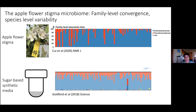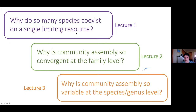I'm placing these two findings side by side. Of course they're not identical, but these environments are very different — a flower versus a sugar-based synthetic medium. Interestingly, we think the nutritional environment a microbe experiences in the flower is not that different from what we find in our experiments. This paints a picture presenting several questions. The first is: why do so many species coexist on a single limiting resource? That was yesterday's lecture. The second is: why is community assembly so convergent at the family level? And in tomorrow's lecture, I'll talk about why it's so variable at the species or genus level.